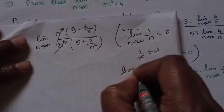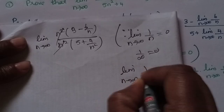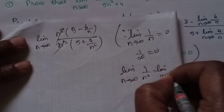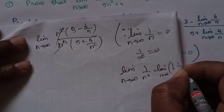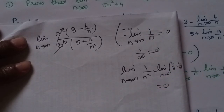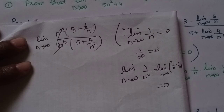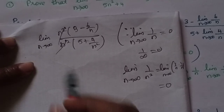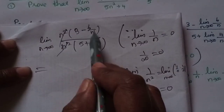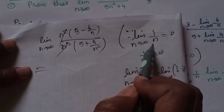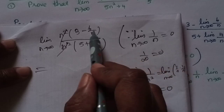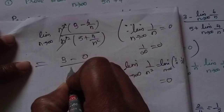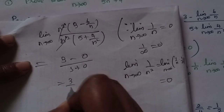What is the limit of 1/n²? Limit n tends to infinity of 1/n into 1/n is 0. Anything divided by n or n² or n³ — we know the limit is 0. So 6/n is 0, 4/n² is 0. Then 3 minus 0 divided by 5 plus 0: the answer is 3 by 5.